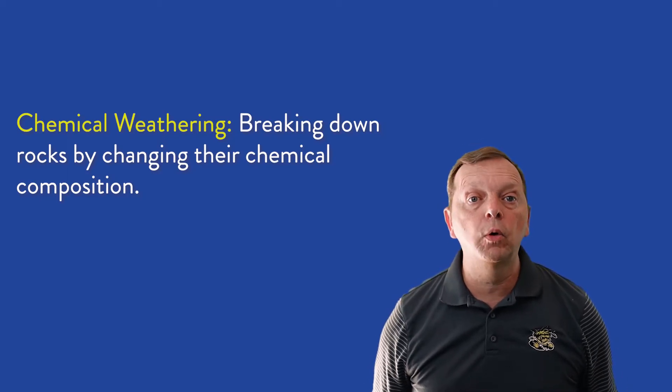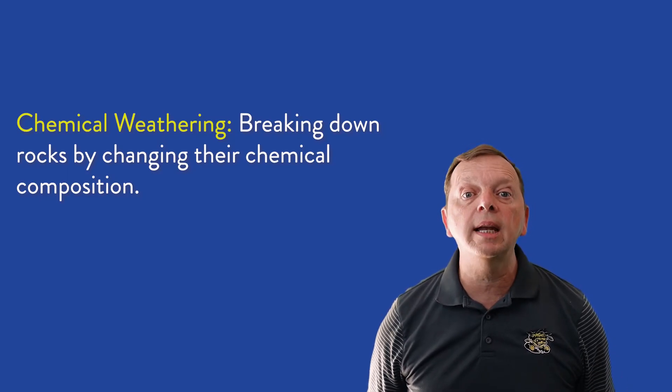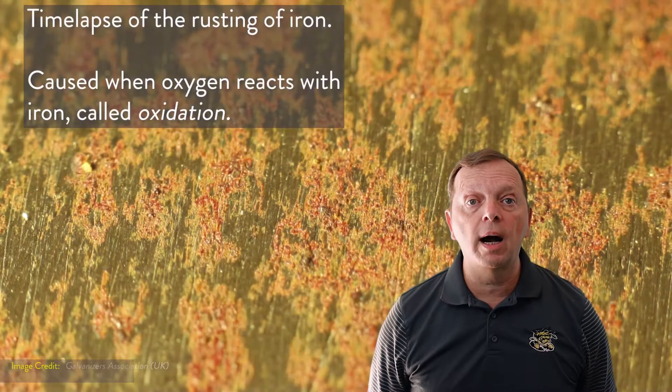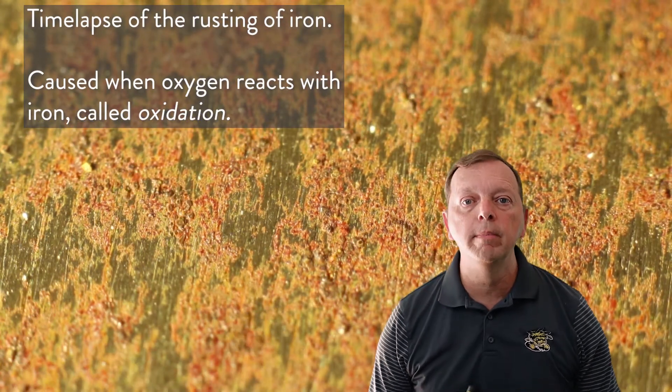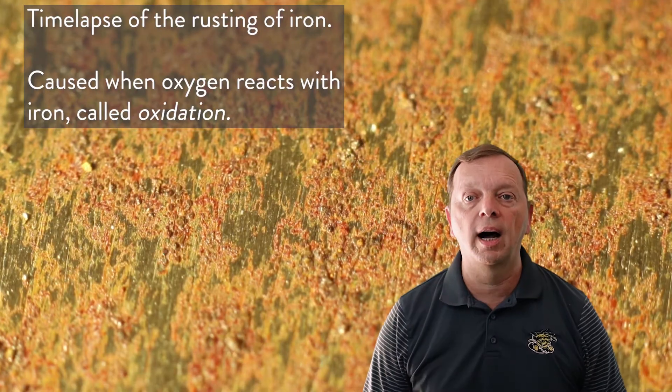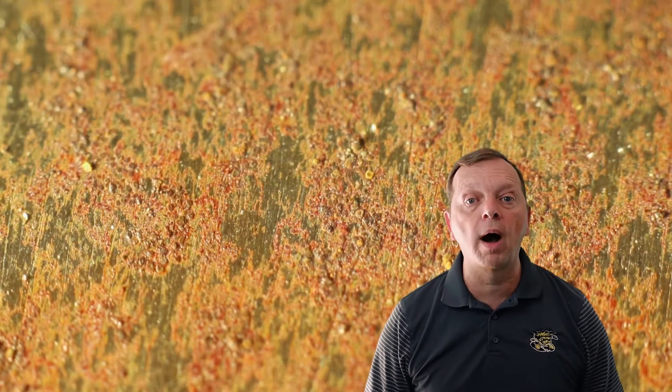Perhaps the easiest example of chemical weathering to understand is rust. Rust occurs when oxygen reacts with iron, slowly breaking down the metal in the process — this is called oxidation. It can happen to rocks. If you look at pictures of the American Southwest, you'll notice the red colors of the rocks. This is a sign of oxidation occurring in the iron found in the rocks, turning them red while also very slowly weathering them down.